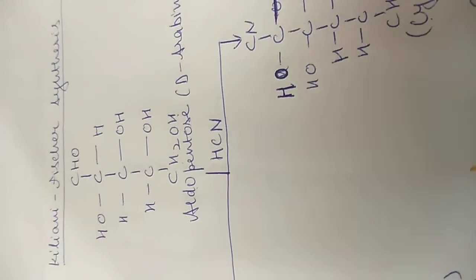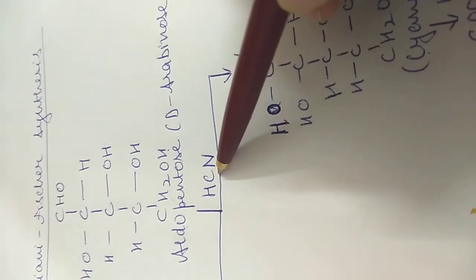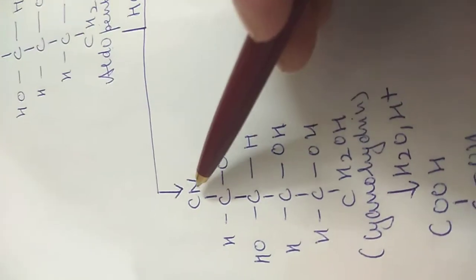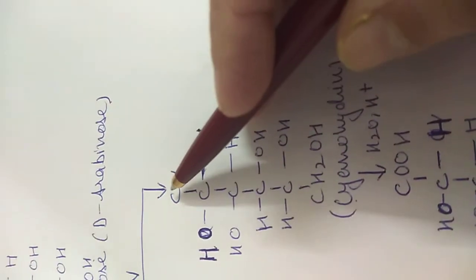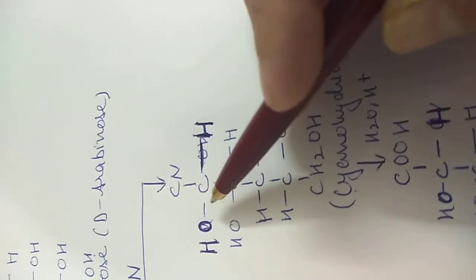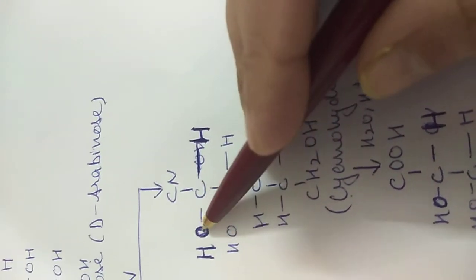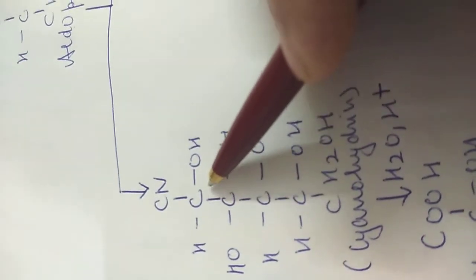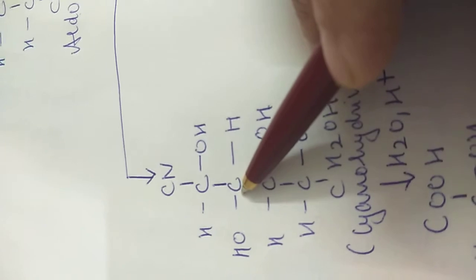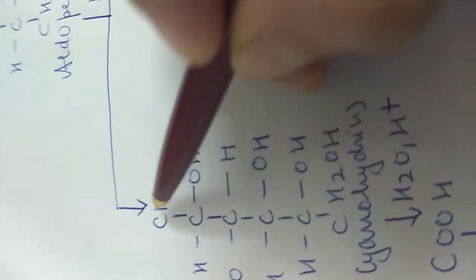We react the aldopentose with HCN. On one side, we get this product where the CHO group is replaced by CN — we get a cyanohydrin. On the other side, we also get a cyanohydrin, but the difference is only in the position of the hydroxy group. At carbon number two and three, the hydroxy groups are on the left side in one product, while in the other, at carbon two the hydroxy group is on the right side and at carbon three it is on the left side.